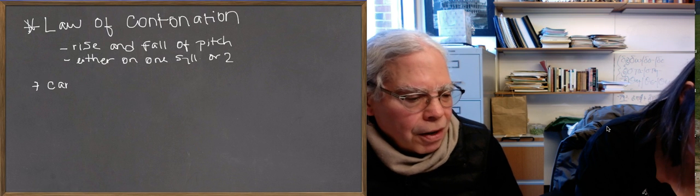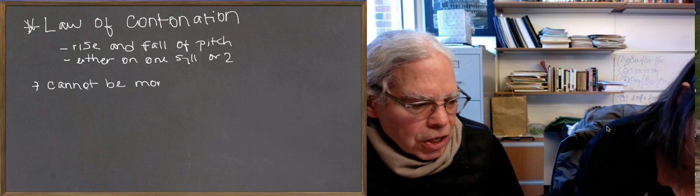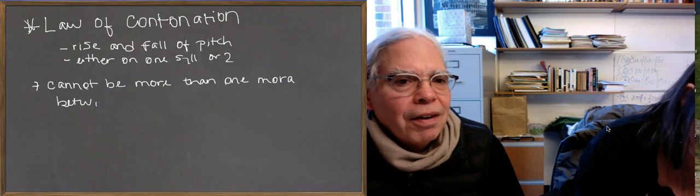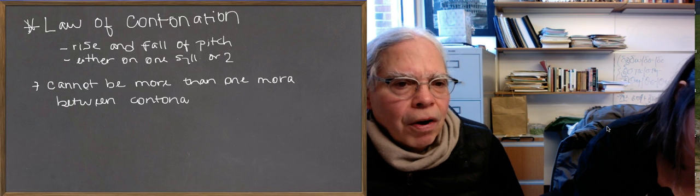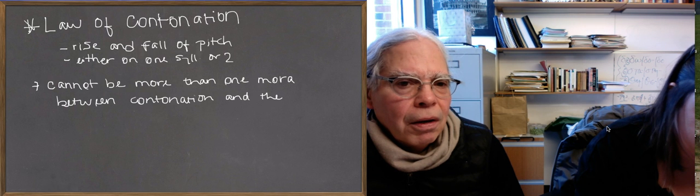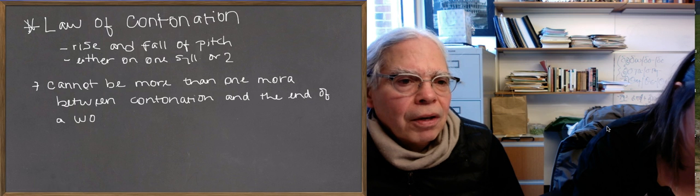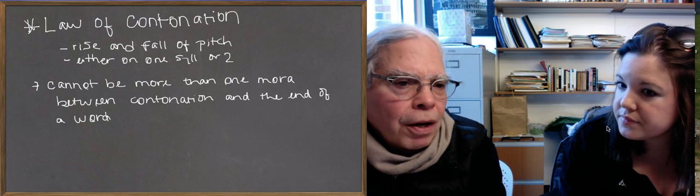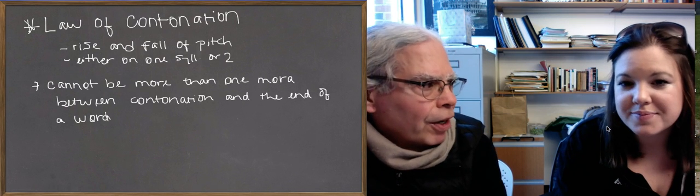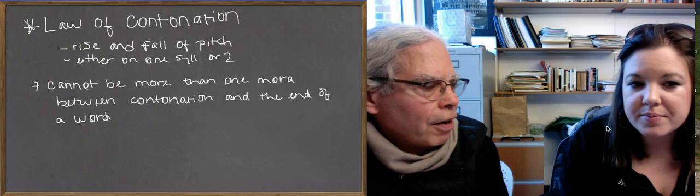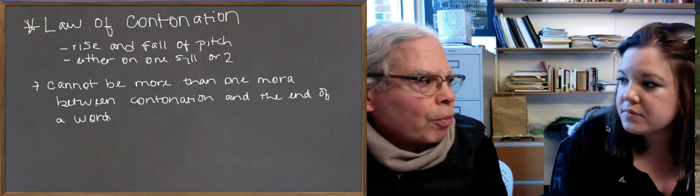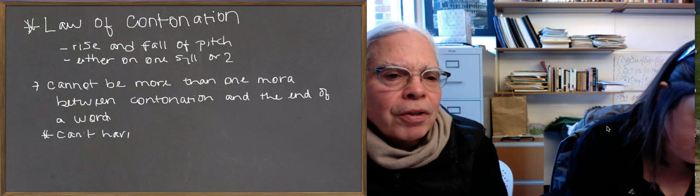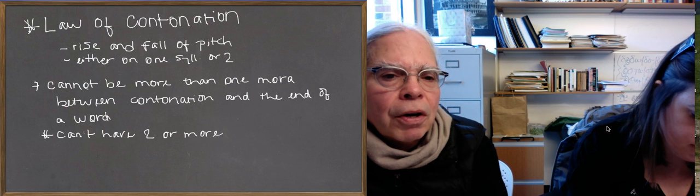Here is the Contonation Law: there cannot be more than one mora between the contonation — that is, the rise and fall of pitch — and the end of a word. That means you can have no morae between the contonation and the end of a word, but you can't have two or more morae between the contonation and the end of a word.